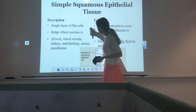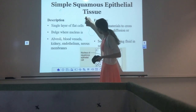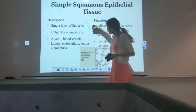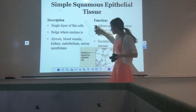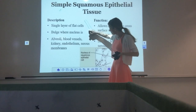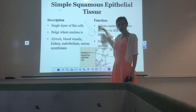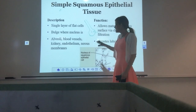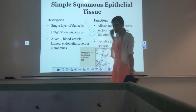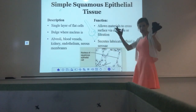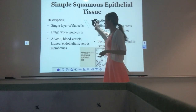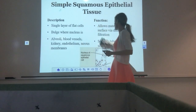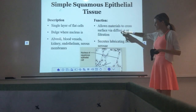We see simple squamous epithelial tissue in alveoli — the little air sacs in the lungs. Air comes in and oxygen needs to cross over into the body, so it's lined with a super thin, single layer of flat cells to make a really thin barrier for air to cross. Simple squamous cells are found in places where we need diffusion to occur — they allow materials to cross easily.